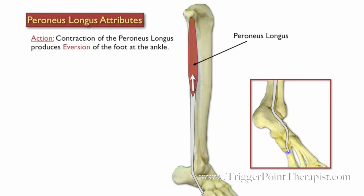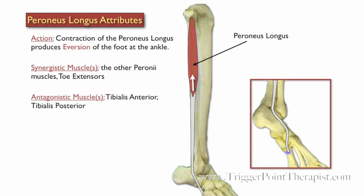Contraction of the Peroneus Longus produces eversion of the foot at the ankle. The other Peronei muscles and the toe extensors are synergistic during this motion. The tibialis anterior and the tibialis posterior are antagonistic during this motion.